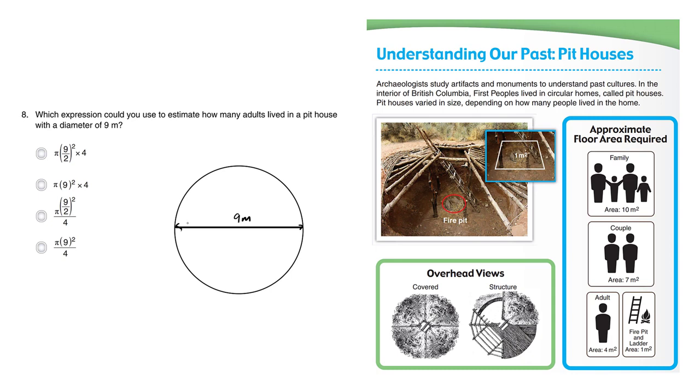The diameter is 9, which goes all the way across the circle. So the radius, which starts from the middle, is going to be 9 divided by 2, or 4.5.